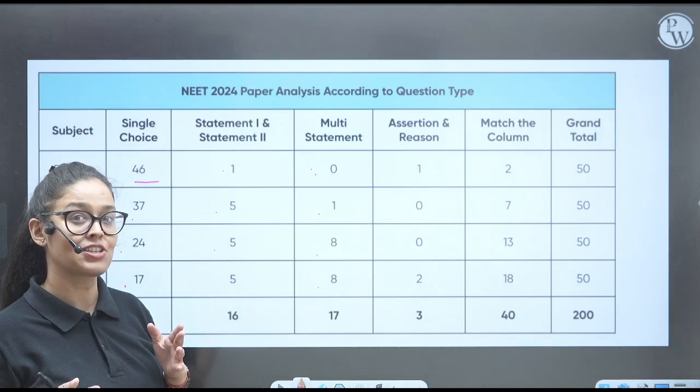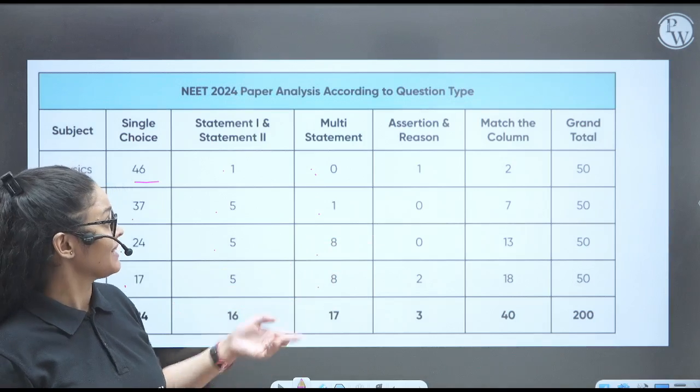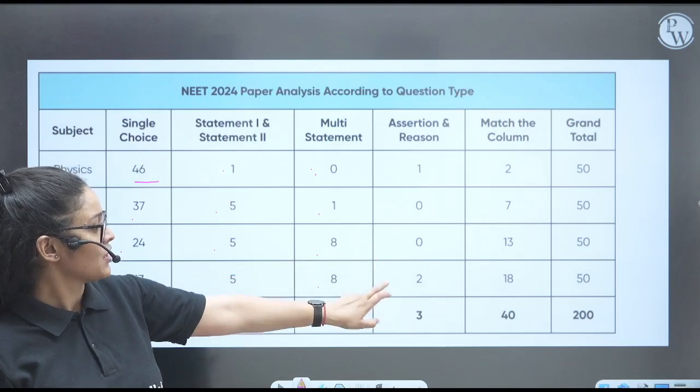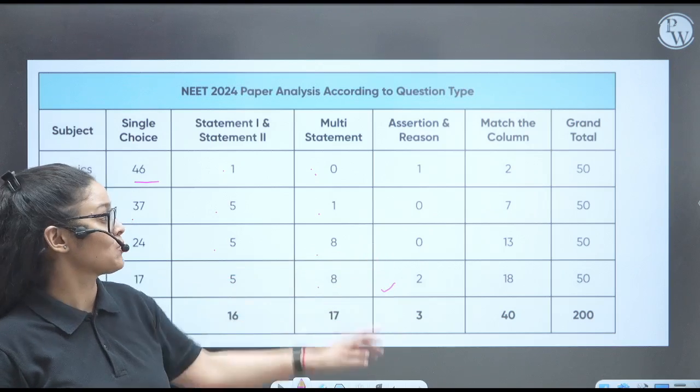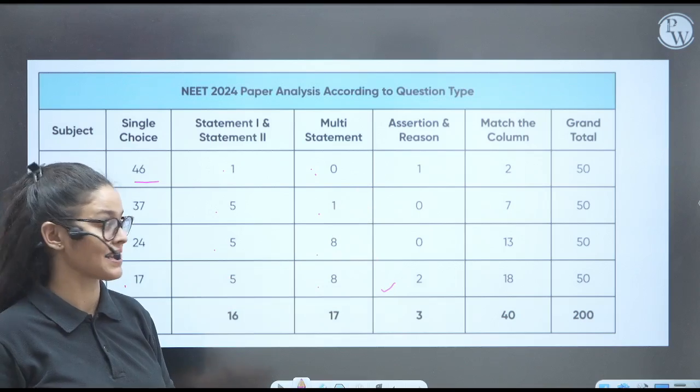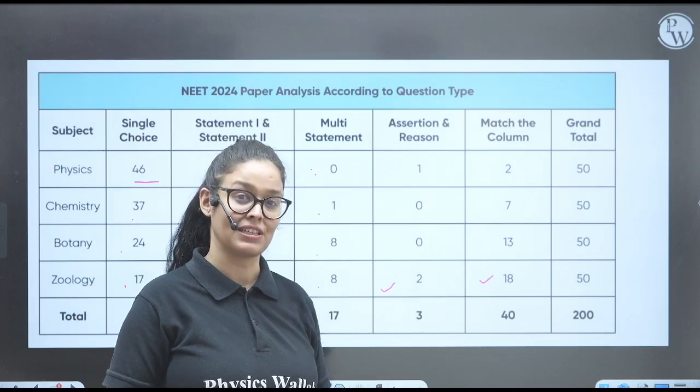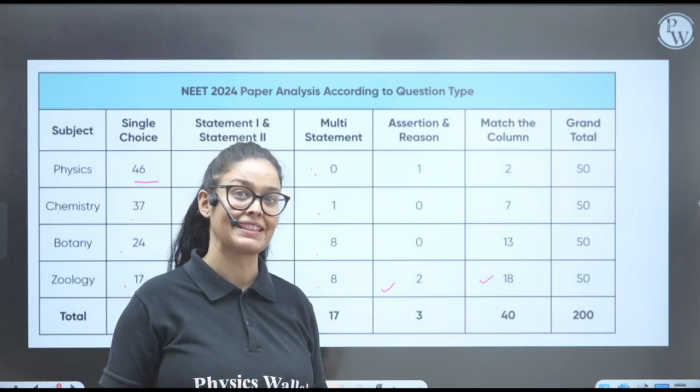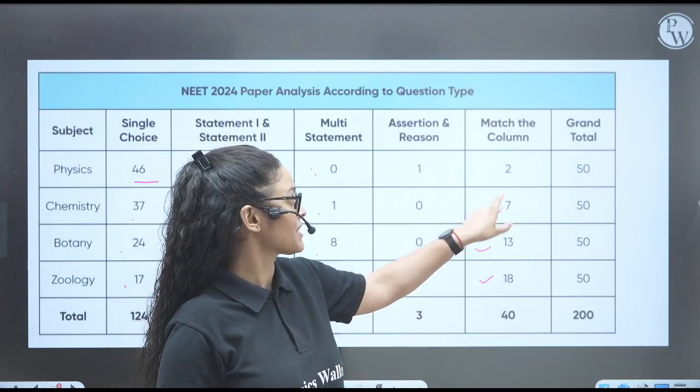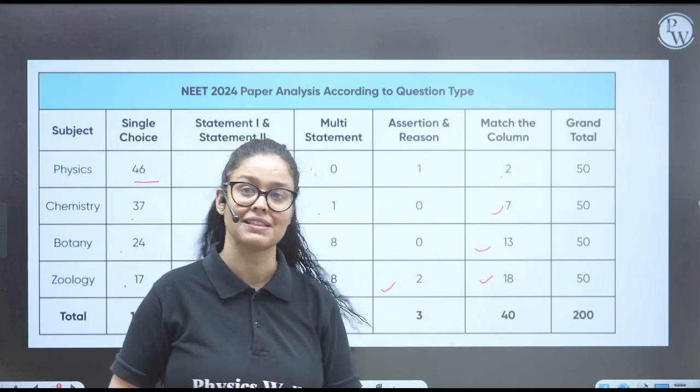Next is assertion reason. So in Zoology, they have asked two assertion reasons. Assertion reason in Physics, they have asked only one type. Match the column - many questions were from Zoology, match the column, and that's why the paper was lengthy in Biology. 13 here, 7, 2, and grand total, you can see all 50 questions.